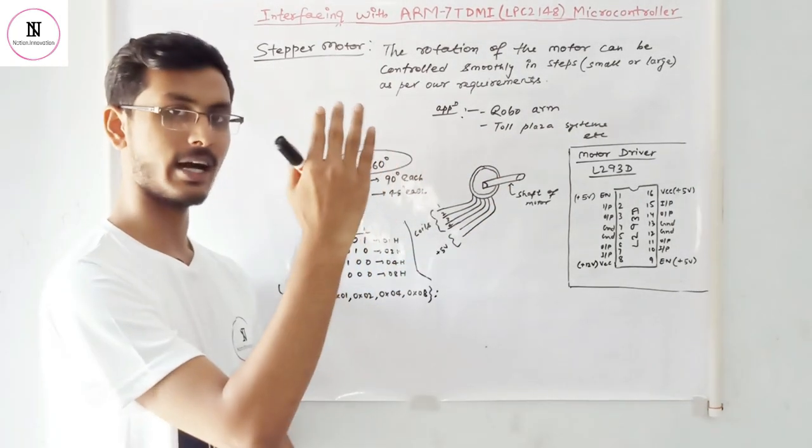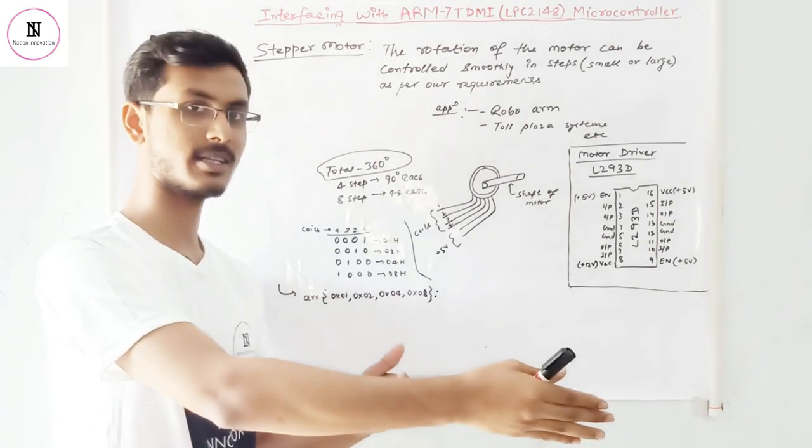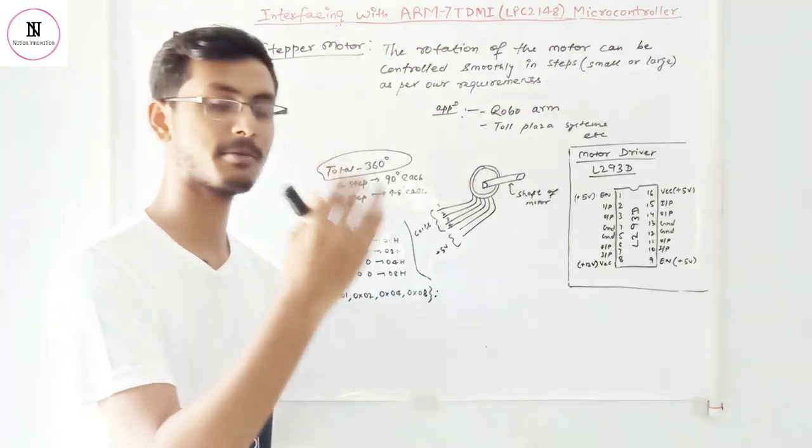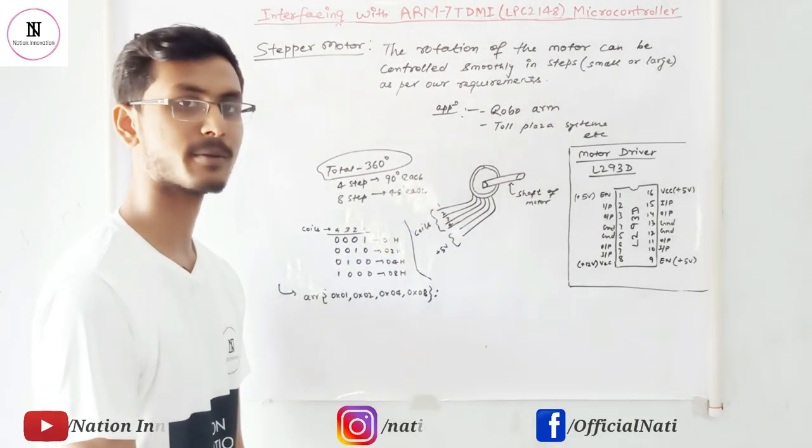In the toll plaza systems, when the car comes, then the shaft will be down and when the process of verification is done, then it will come to them and the car will be passed. Such type of applications can be achieved with the stepper motor control.